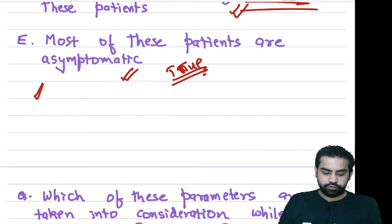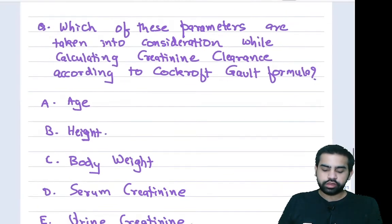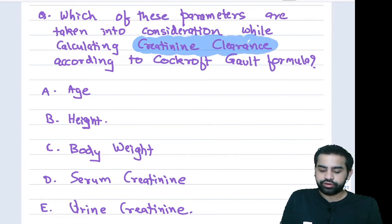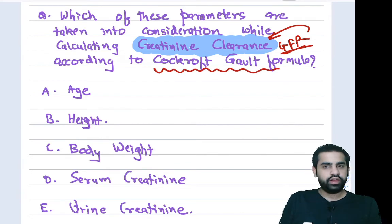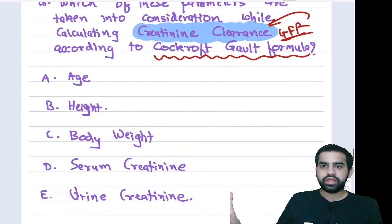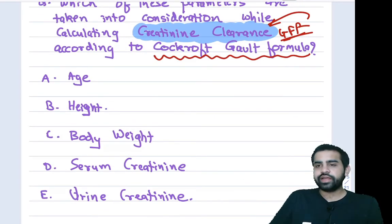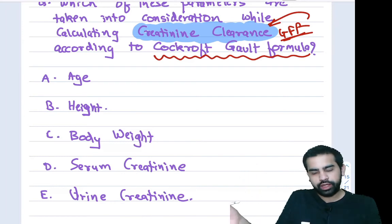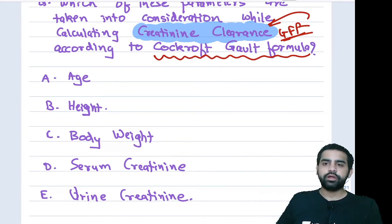Next question: which parameters are used in calculating creatinine clearance? GFR is measured using creatinine clearance with the Cockcroft-Gault formula. You need to remember the elements of this formula. Age is one factor — option D is correct. Sodium is not a factor in the Cockcroft-Gault formula.